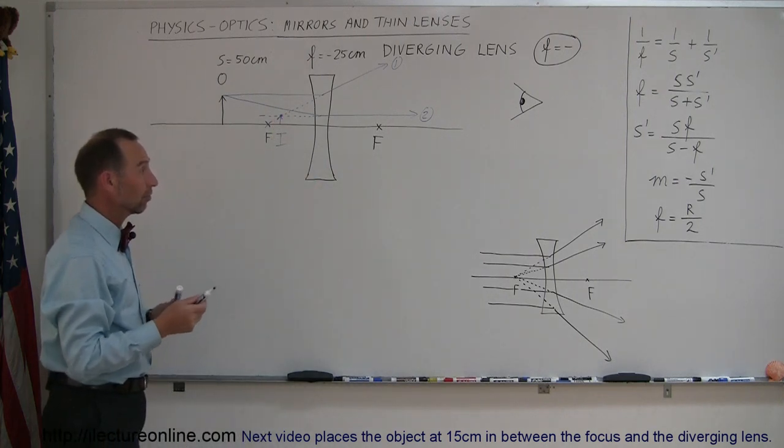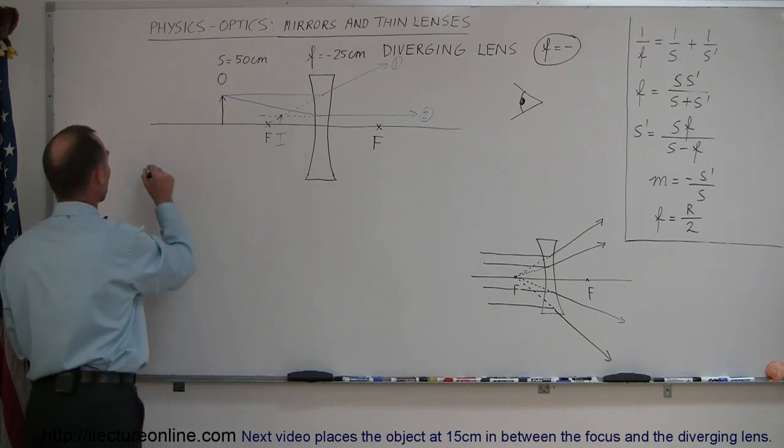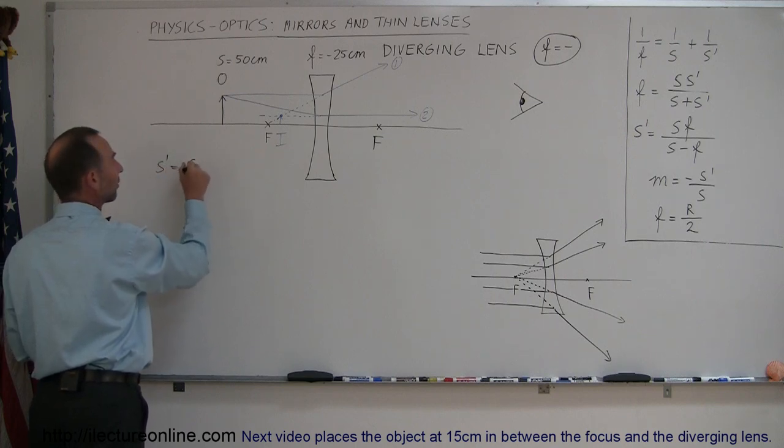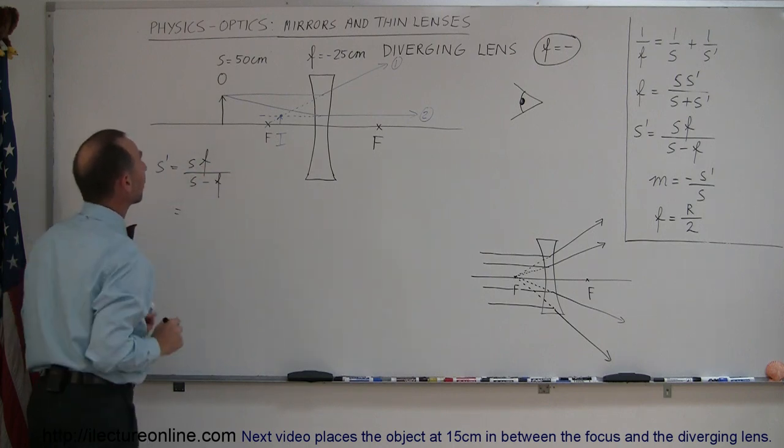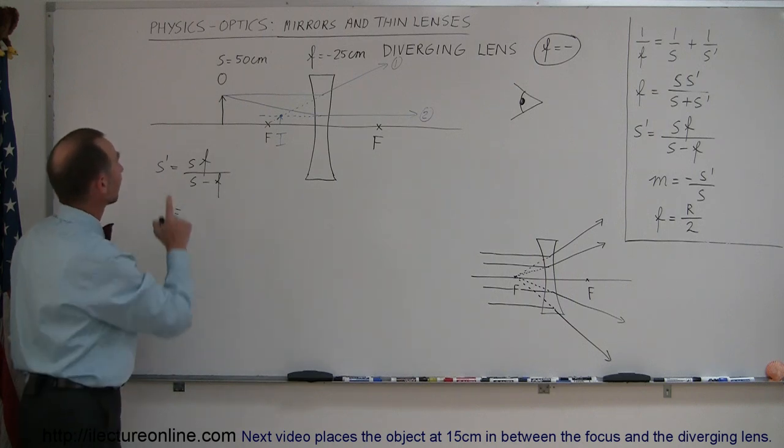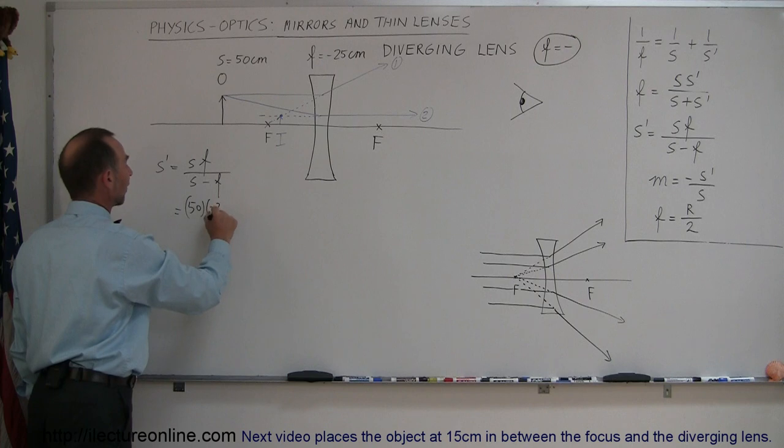Now let's use our equations to figure out where the exact location of the image is. Again we use the same equation. S prime, that's the distance to the image, is equal to S times F, that's the distance to the object and the focal length, divided by S minus F. Let's plug in the numbers that we have.